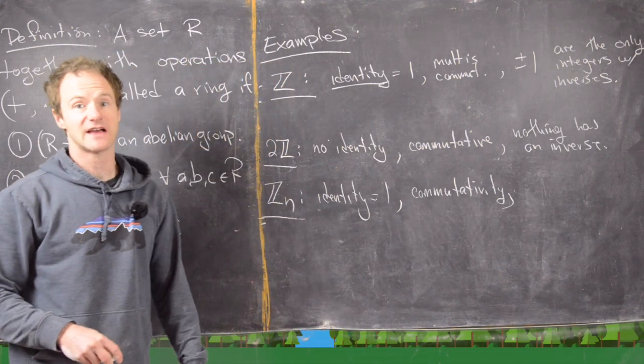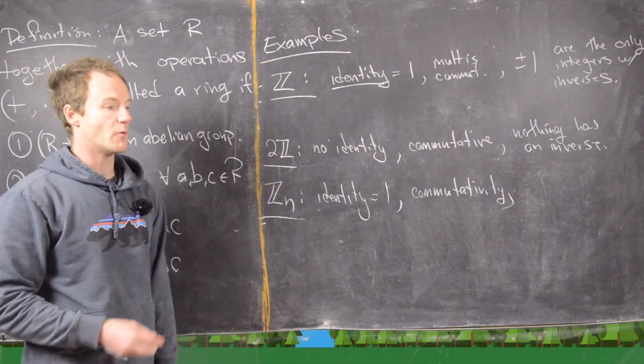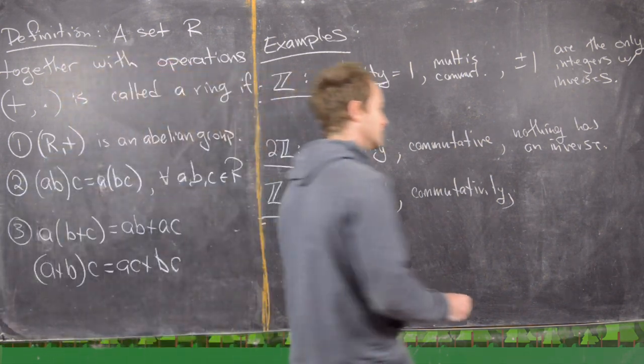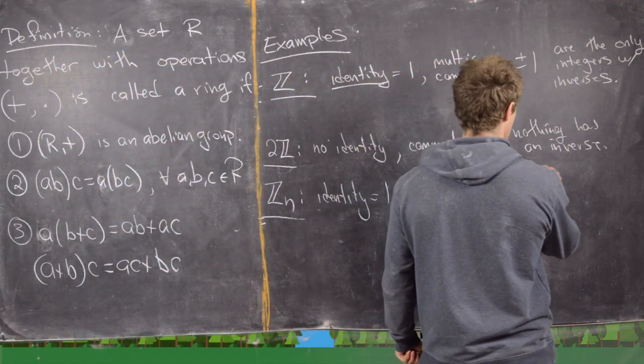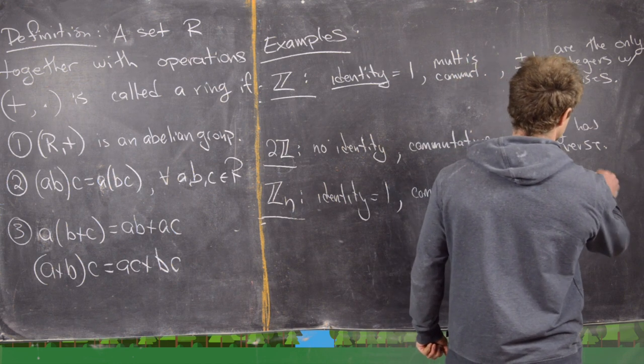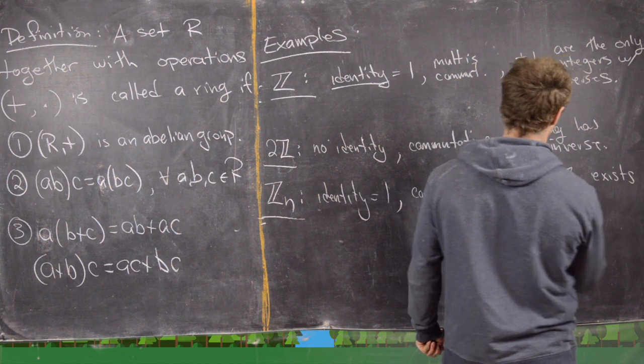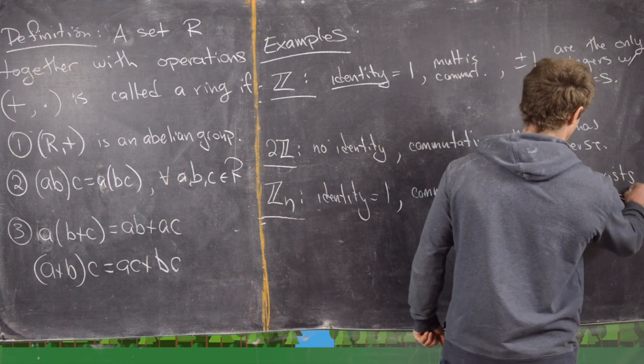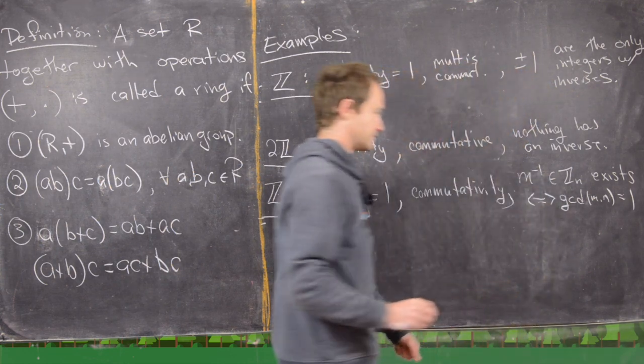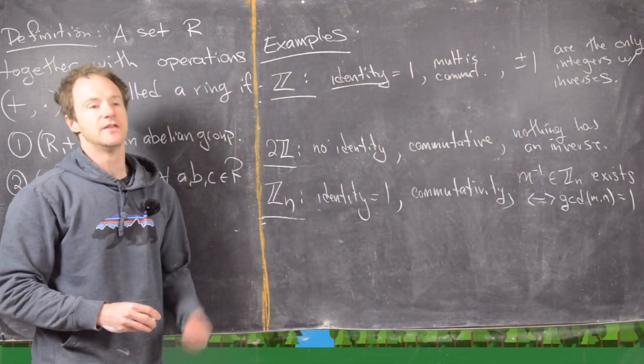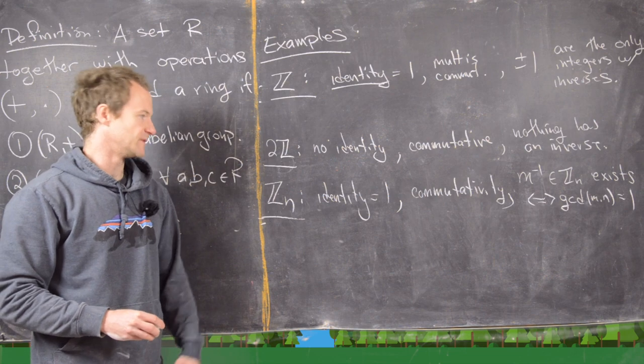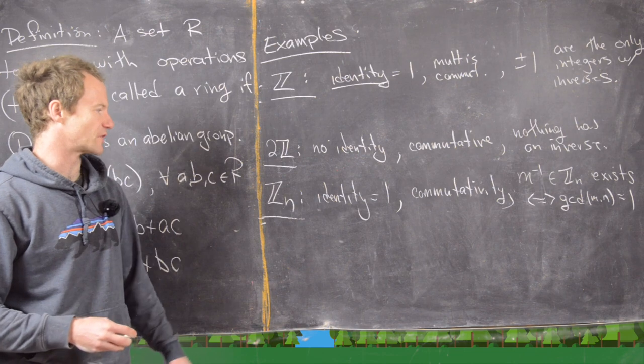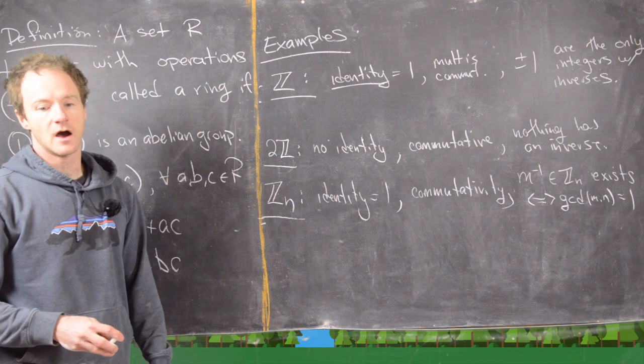And then some stuff has inverses. And from what we know about group theory, everything that's relatively prime has an inverse. So we'll say that m inverse in Zn exists if and only if the gcd of m and n equals 1. In other words, m is in Un, the group of units modulo n. So we'll look at this ring a lot more carefully later. But just as a brief overview, that's what we get for Zn.